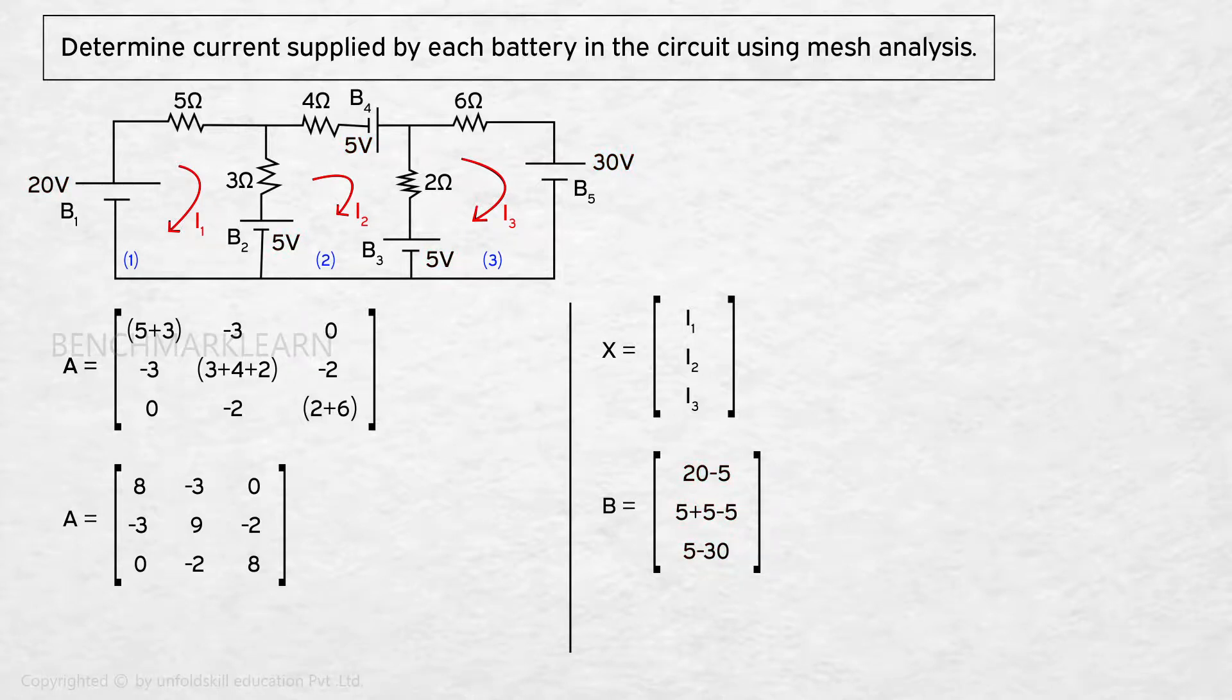Matrix B equal to 20 minus 5, 5 plus 5 minus 5, 5 minus 30. Or matrix B equal to 15, 5, minus 25.